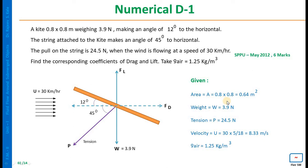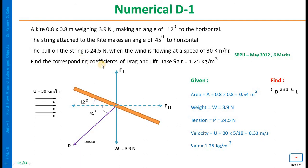The given parameters are: area of kite = 0.8 m × 0.8 m = 0.64 m². Weight of kite = 3.9 N acting in the downward direction. Tension in the string = 24.5 N. Velocity of wind = 30 km/hour, which can be converted into meters per second. Density is given. We have to find the coefficient of drag and coefficient of lift.